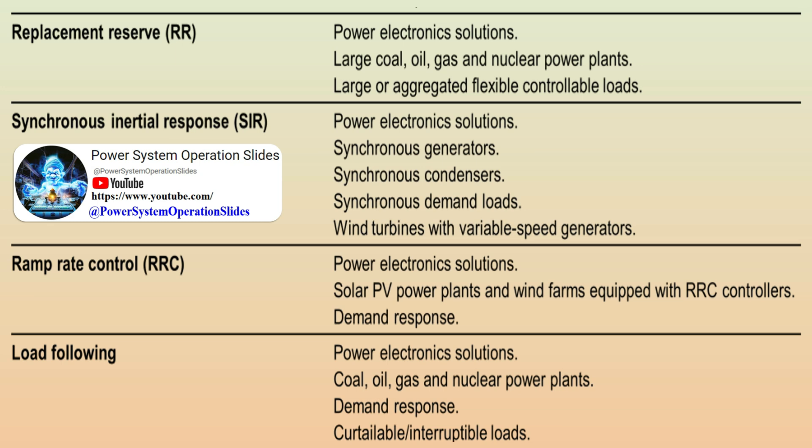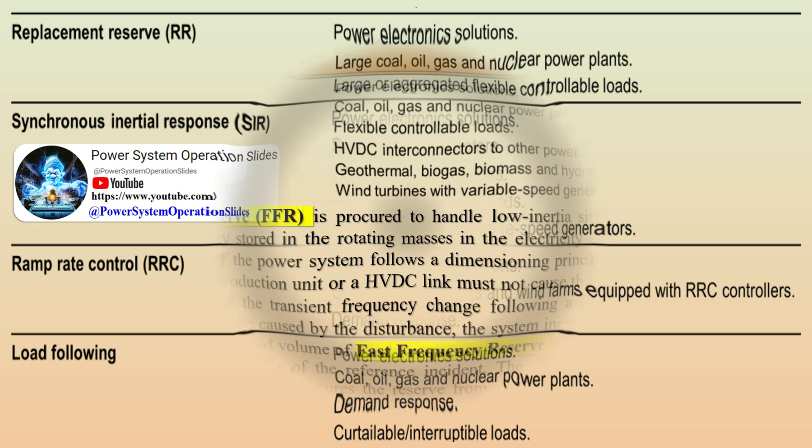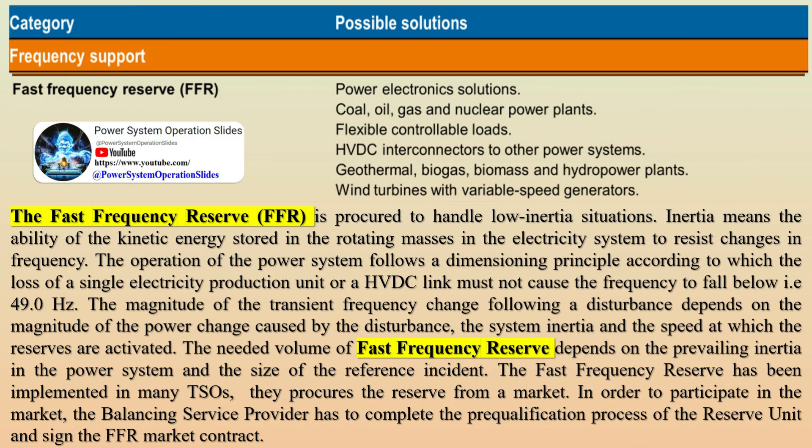To ensure the provision of ancillary services required for secure and stable operation of modern electric power systems, the following solutions are typically used: functionalities and flexibility offered by generators, energy storage systems and loads; properties and performance required via grid codes or legal requirements of devices connected to the electric power system; flexible use of electrical grids by TSOs and DSOs via their energy management systems; and services procured by system operators from third parties based on bilateral agreements or market mechanisms.